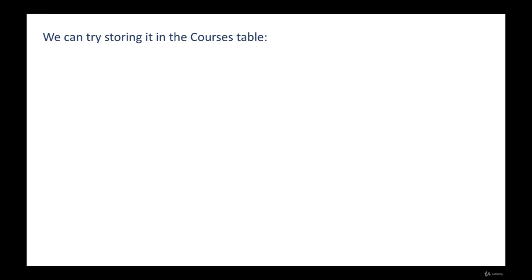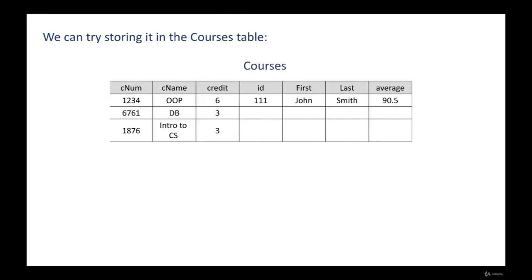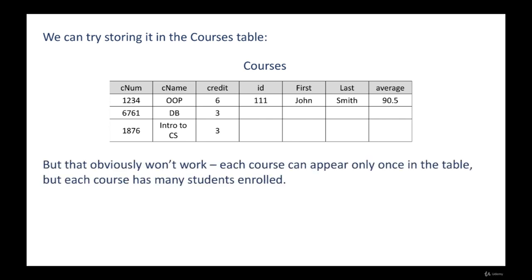Another attempt is to try storing the data in the courses table — we enlarge it by adding columns for students. We can see that OOP was taken by John Smith with all its details. But this obviously won't work either. Each course can appear only once in the table, but each course has many students enrolled. Sarah Berker also enrolled in the OOP course, but we cannot indicate this because OOP appears only once in the table.